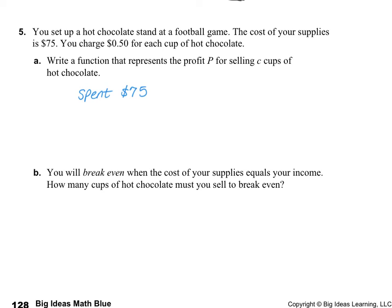We spent $75, and so this is how much money is already gone — that we had to take out. So then we're going to add to that $0.50 per cup that we sell. So if we have already spent it, that means that we're less $75. We don't have that $75 — we had to borrow it or take it out of our savings account. So it's negative.